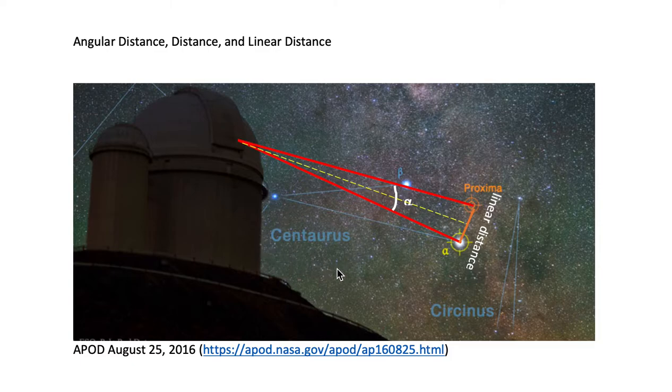We're looking at Centaurus and we're looking at Cercinus. We're also looking at a gravitationally bound star system. Of the stars that are in the system, two are being shown.